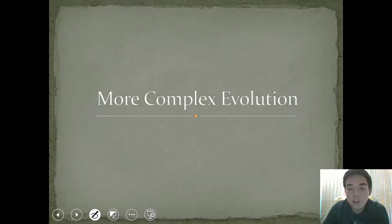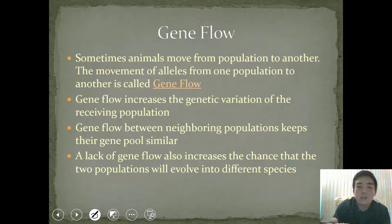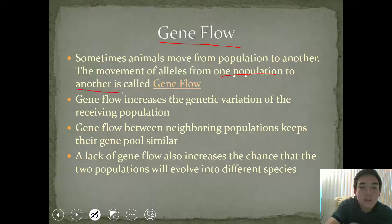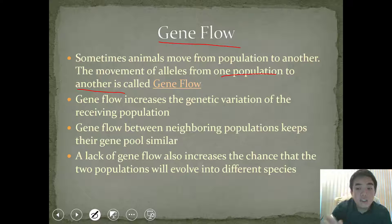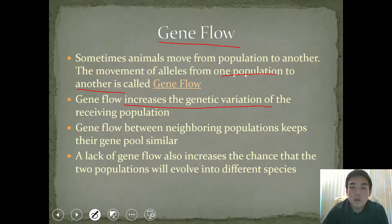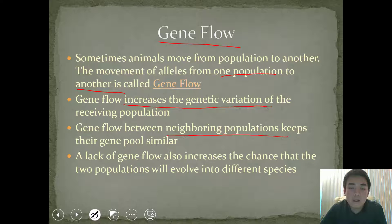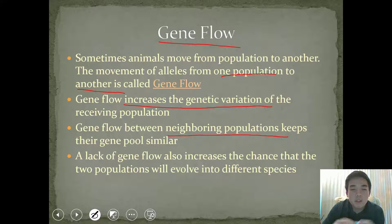We're going to talk a little bit about more complex evolution topics. One of those topics is something we call gene flow. Gene flow is the movement of alleles from one population to another, and this is generally because an animal or organism can freely move between populations. Gene flow increases the genetic variation of the receiving population. If you imagine an individual that can move from one population, it's going to bring its own alleles — and sometimes they are different — so it's going to increase that variation we see in that new population. Yet, when gene flow occurs between neighboring populations, it actually keeps the gene pool quite similar, because if there's only two populations and they're just moving back and forth between them, the gene pool never changes that much.